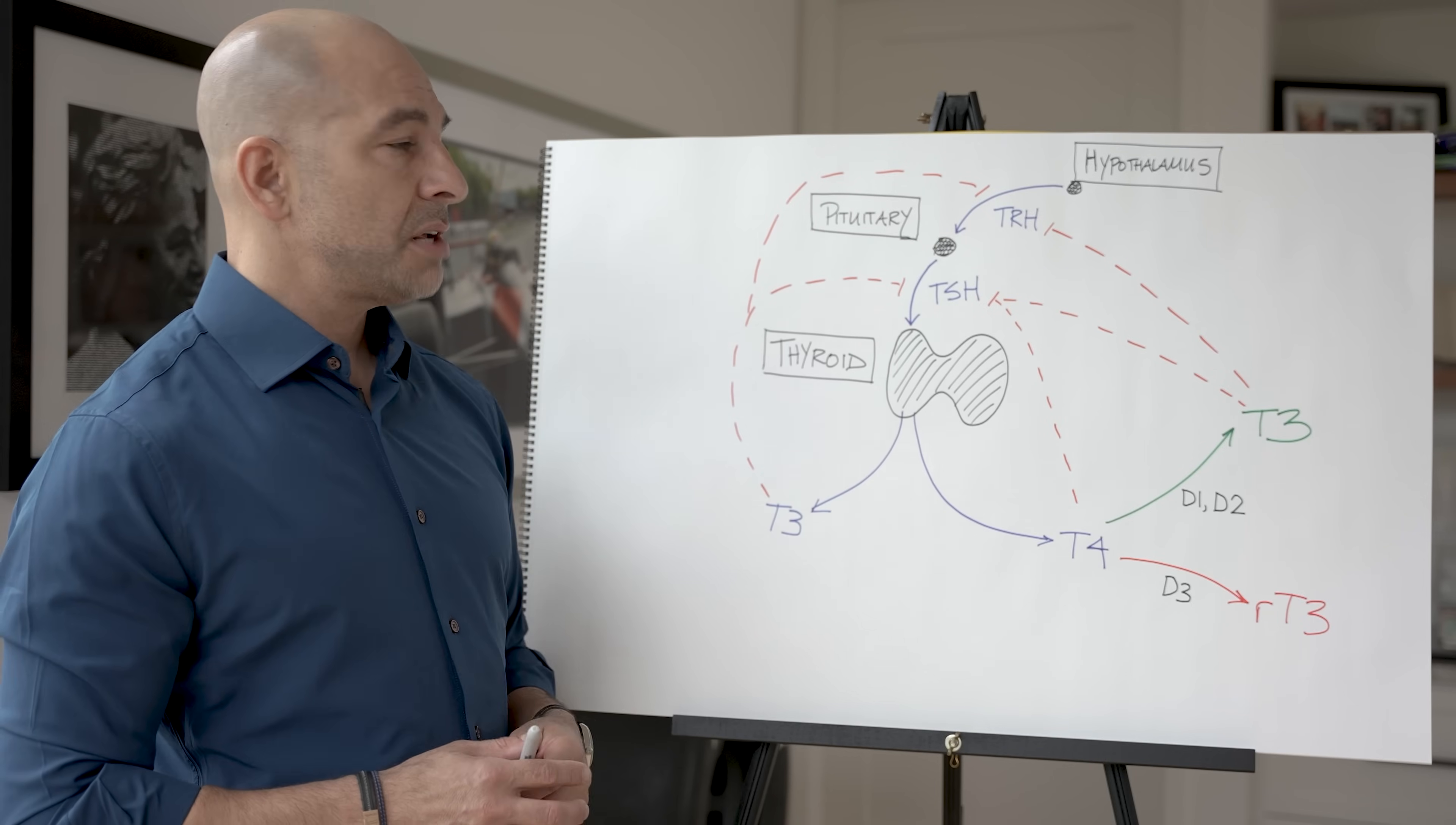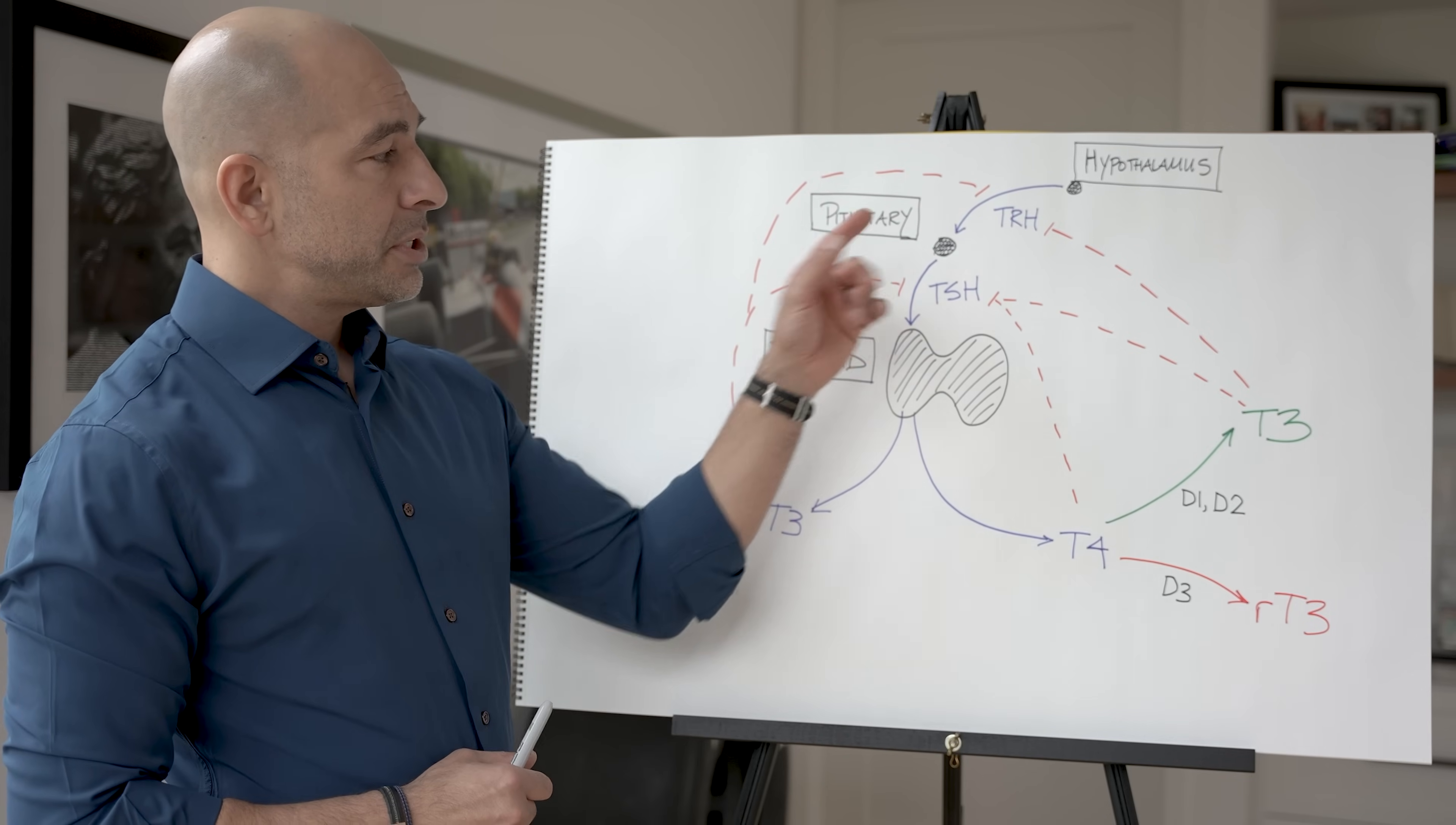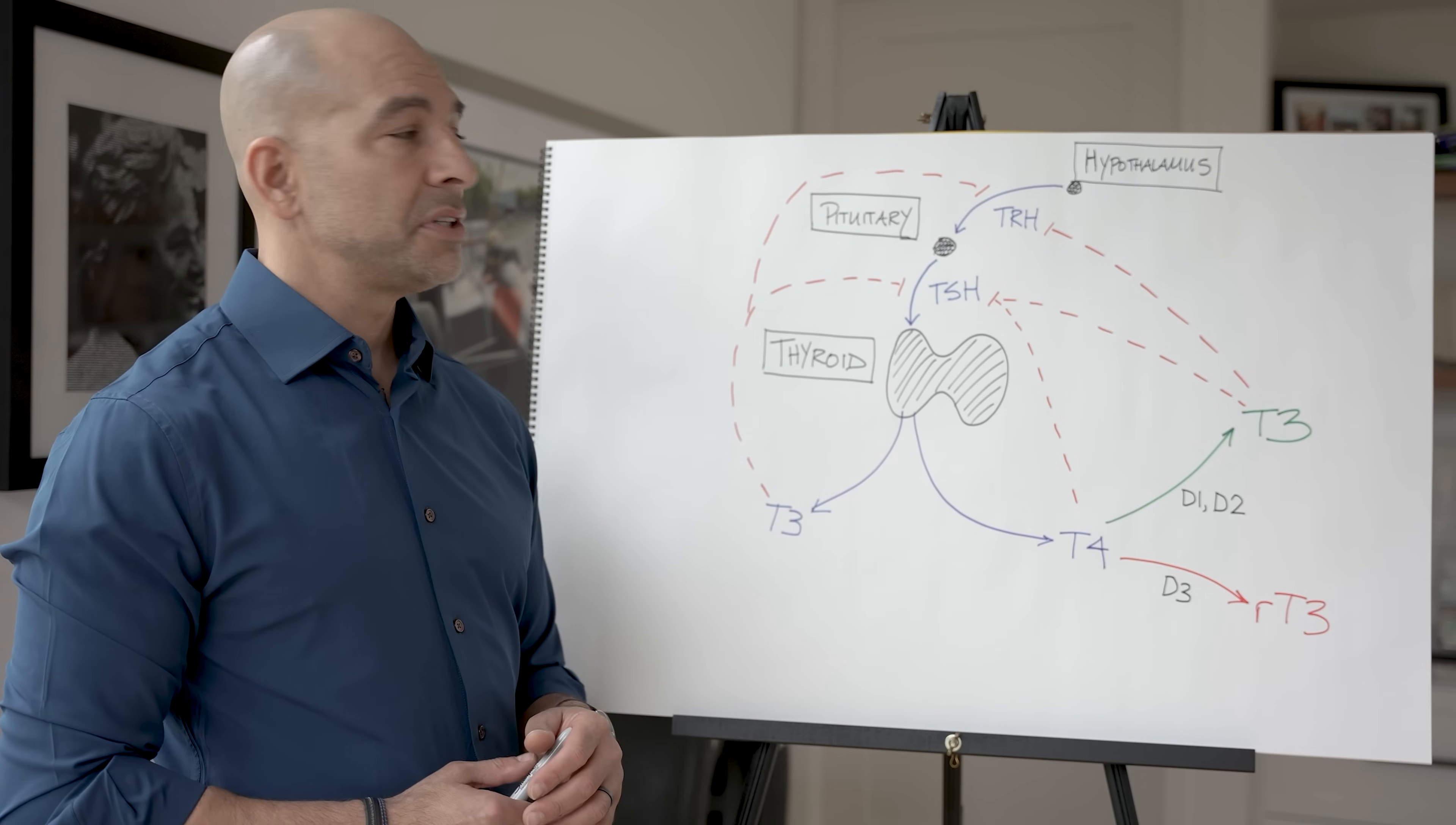TSH is stimulated from the anterior portion of the pituitary gland, and it tells the thyroid gland to make T4 and T3. The pituitary gland is regulated upstream by the hypothalamus, which stimulates it via a hormone called TRH.